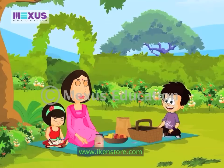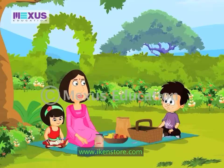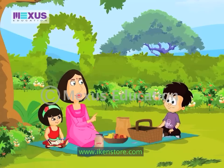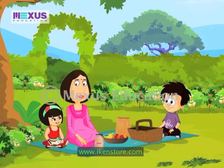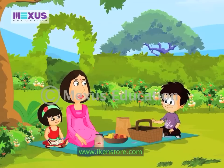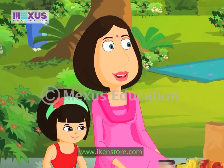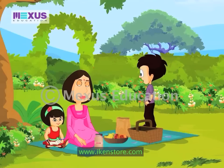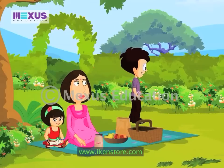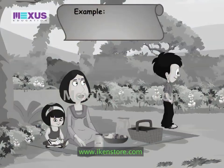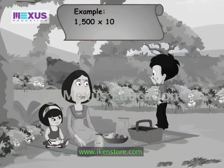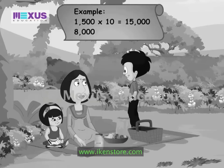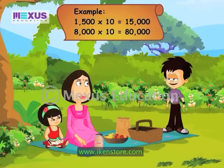So while multiplying a number by 10, all I need to do is add a zero after it and I'll have the answer. Yes. So what is 152 x 10? 1520. Yes, exactly. Now I can multiply extremely large numbers with 10 easily. 1500 x 10 becomes 15,000. 8,000 x 10 becomes 80,000.